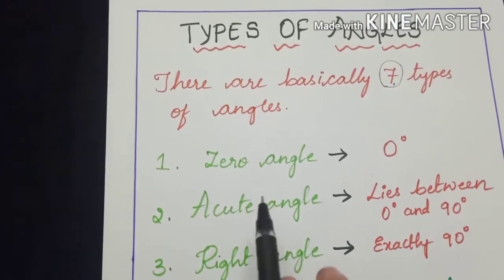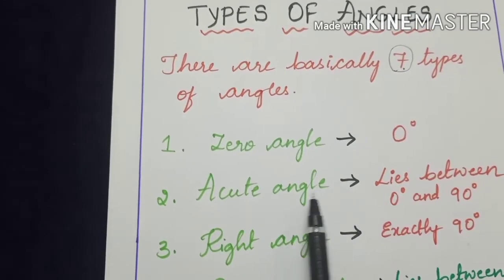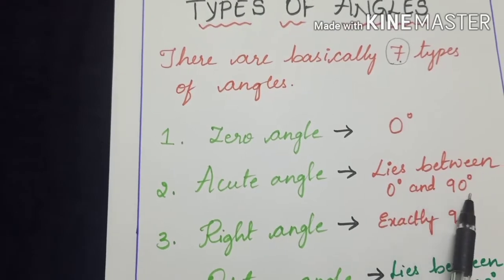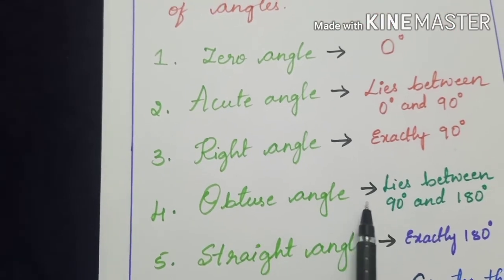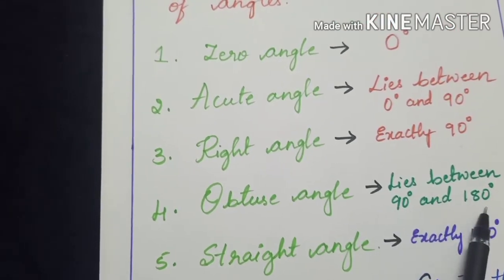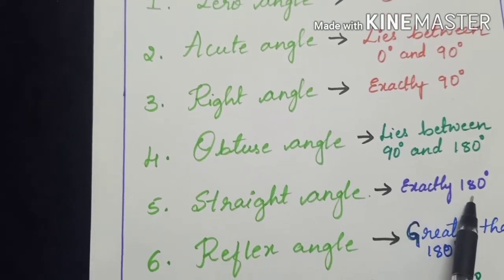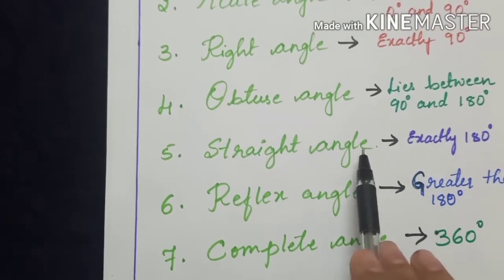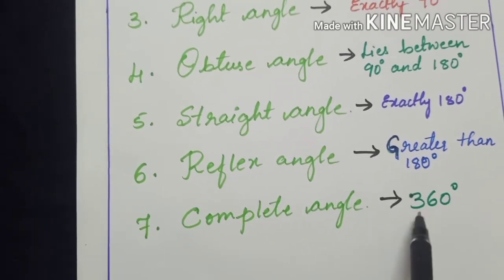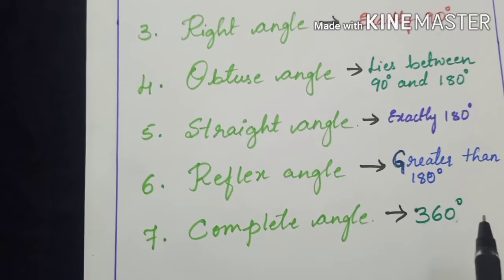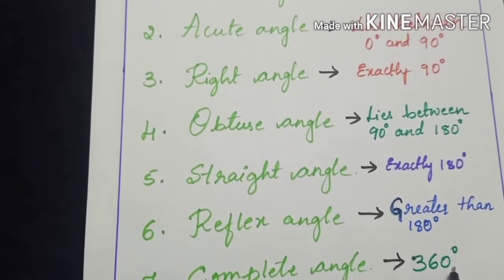Let us learn once again. Zero angle measures zero degrees. Acute angle — the measure lies between zero degrees and ninety degrees. Right angle measures ninety degrees. Obtuse angle — the measure of this angle is exactly one hundred eighty degrees. Reflex angle is greater than one hundred eighty degrees. The last one, complete angle, forms a circle — that is three hundred sixty degrees. I hope you remember this, which you have already studied in your fifth standard.